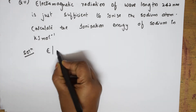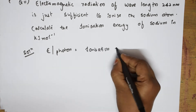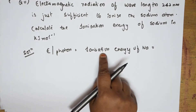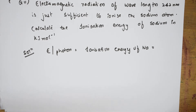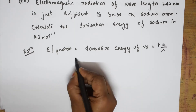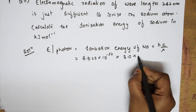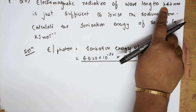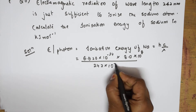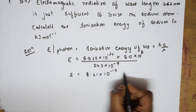Let us write the formula. E photon is equal to the ionization energy of sodium. We are comparing these two because it is that energy only which we use to take out the electron from the outermost shell. E photon is nothing but hc by lambda. Substitute the values: 6.626 × 10⁻³⁴ into velocity 3 × 10⁸, divided by lambda which is 242 nanometers — convert nanometers to meters by multiplying by 10⁻⁹. I get an answer of E = 8.21 × 10⁻¹⁹ joule per atom.